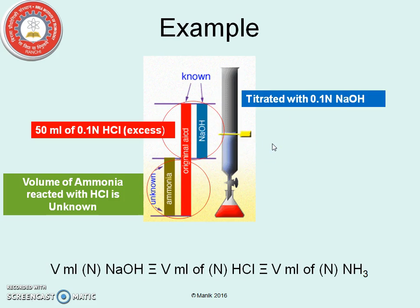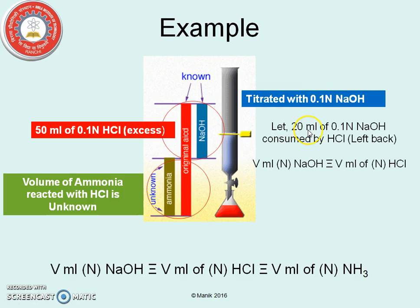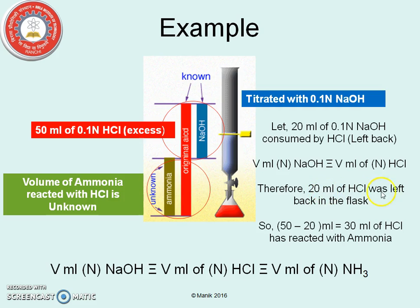To find this amount, we titrate with 0.1 normal NaOH solution. Here we have taken 0.1 normal HCl, and 0.1 normal NaOH. Let 20 ml of 0.1 normal NaOH be consumed by the HCl which is left back. From the equivalence, ml of N NaOH will be equivalent to ml of N HCl. So 20 ml of HCl is left back in this flask. Therefore, 50 minus 20 ml, that is 30 ml of HCl has reacted with ammonia.